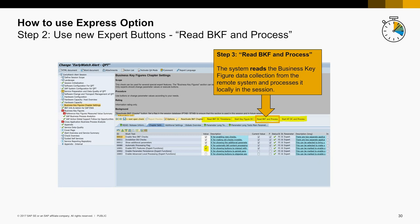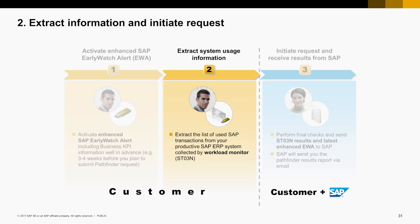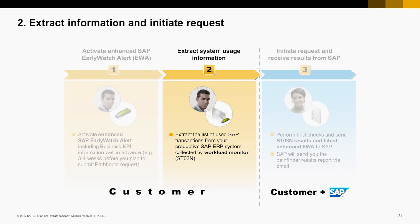Once the data collection job is finished, you can press the button Read Business Key Figures and Process. That's it. Once you have your Enhanced EWA, you extract system usage information. The list of used SAP transactions from your productive SAP ERP system is collected by the Workload Monitor, which is transaction code ST03N. The details can be found in the Pathfinder Manual.